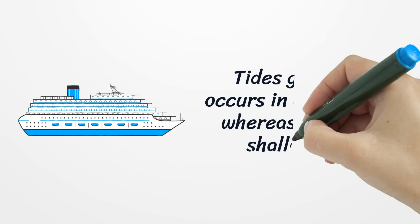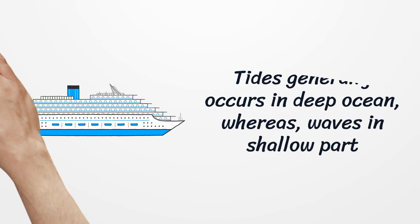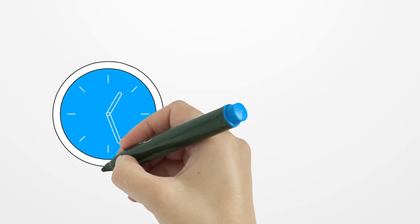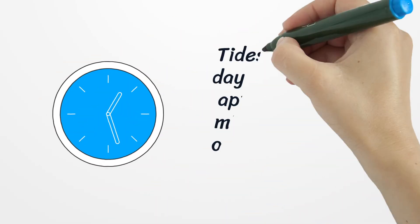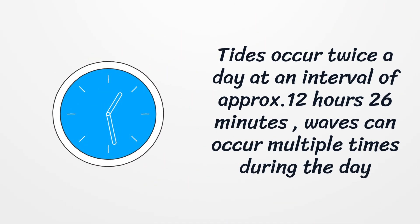Tides generally occur in the deep ocean, whereas waves occur in shallow parts. Tides occur twice a day at an interval of approximately 12 hours and 26 minutes. Waves, however, can occur multiple times during the day.